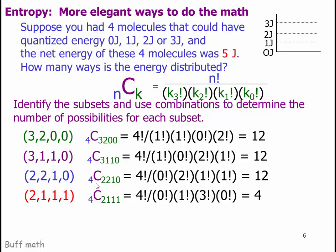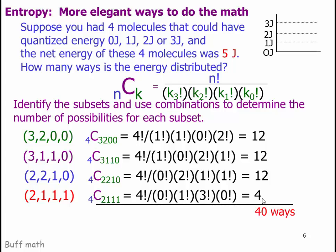For the 2, 2, 1, 0 subset: no molecules at 3, two at energy level 2, one at energy level 1, and one at energy level 0 — this is again 12. For the last combination 2, 1, 1, 1: no molecules at 3, one molecule at 2, three molecules at 1, and none at 0. 4 factorial divided by the denominator containing 3 factorial gives the value 4. Summing all these together, we get 40 ways.